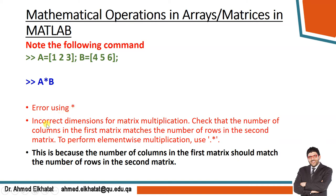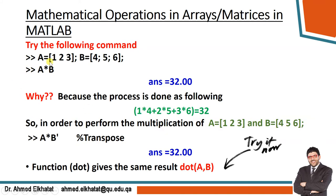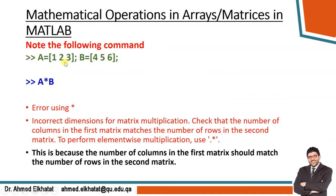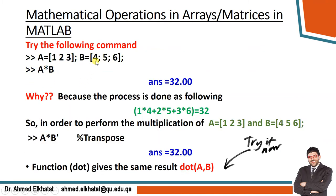This is because the number of columns in the first matrix should match the number of rows in the second matrix. But if we convert this one to be vertical - 4 semicolon 5 semicolon 6 - and then A times B, it will give me the answer.